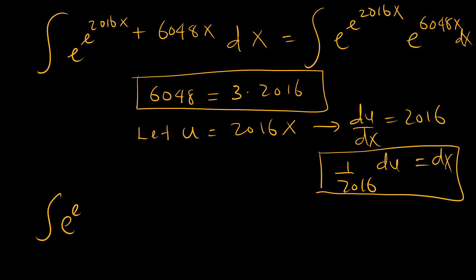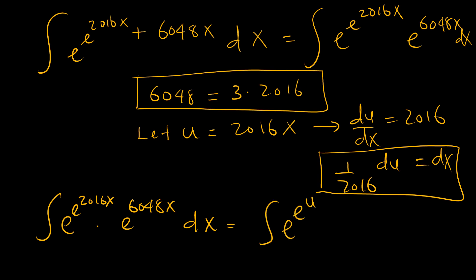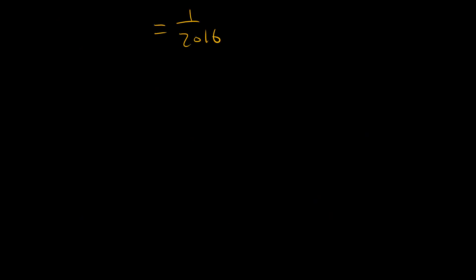Therefore, our problem e to the power e to the power 2016x times e to the power 6048x is equal to e to the power e to the power u, and then e to the power 3u, du, and we bring 1 over 2016 out. So now we have 1 over 2016 times the integral of e to the power e to the power u, times e to the power 3u, du.